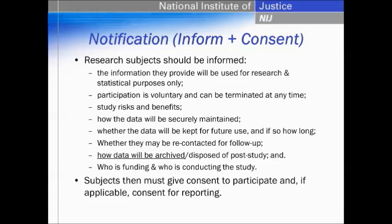This citation is one that's important for you to keep in mind and to note: 42 U.S.C. 3789g. It is our confidentiality statute, and it provides that all the identifiable data collected is immune from legal process. Of course, anyone can subpoena anyone, so any DOJ-funded researcher can get a subpoena, but they may not release any identifiable data in response to that subpoena request.